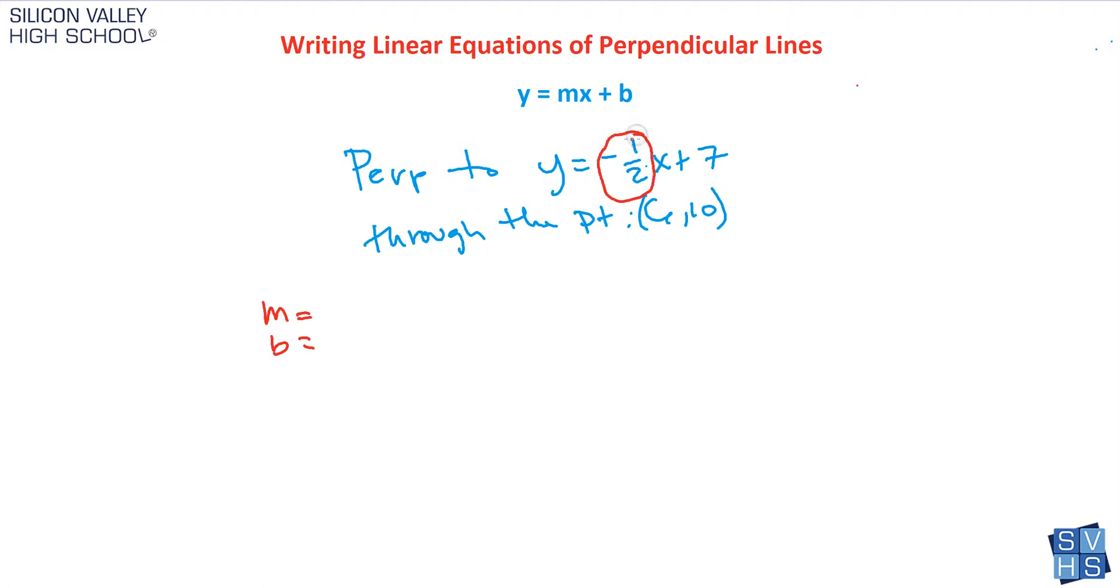His slope is negative a half. Couldn't I flip it and change the sign? Positive two over one, or in other words, just two. And that is my slope. So that's exactly what you do. You take their slope, you flip it and change the sign, and now it's your slope. I could write two over one, but two is the same thing.